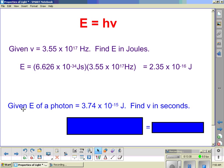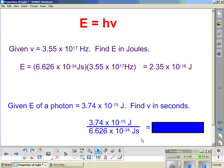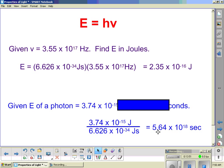Here we're given the energy of a photon, and we need to find the frequency. Well, if we move these around, we're given energy, we know Planck's constant, we need to find frequency, we can simply divide the energy by Planck's constant, and that will give us our frequency, 5.64 times 10 to the 18th seconds.